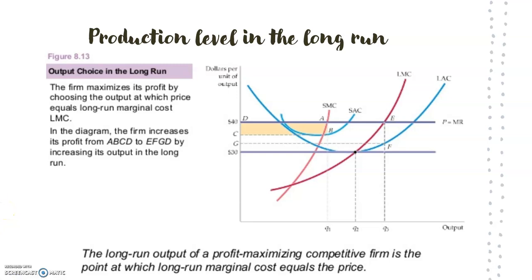In the long-run equilibrium, as in the short run, the point where the firm is going to maximize profits is where the price — which is given, since the firm is a price taker — equals the long-run marginal cost. When these two factors are equal we are maximizing profits, and it happens at quantity Q2 in this diagram. So the long-run output of a profit-maximizing competitive firm is where marginal cost equals price.